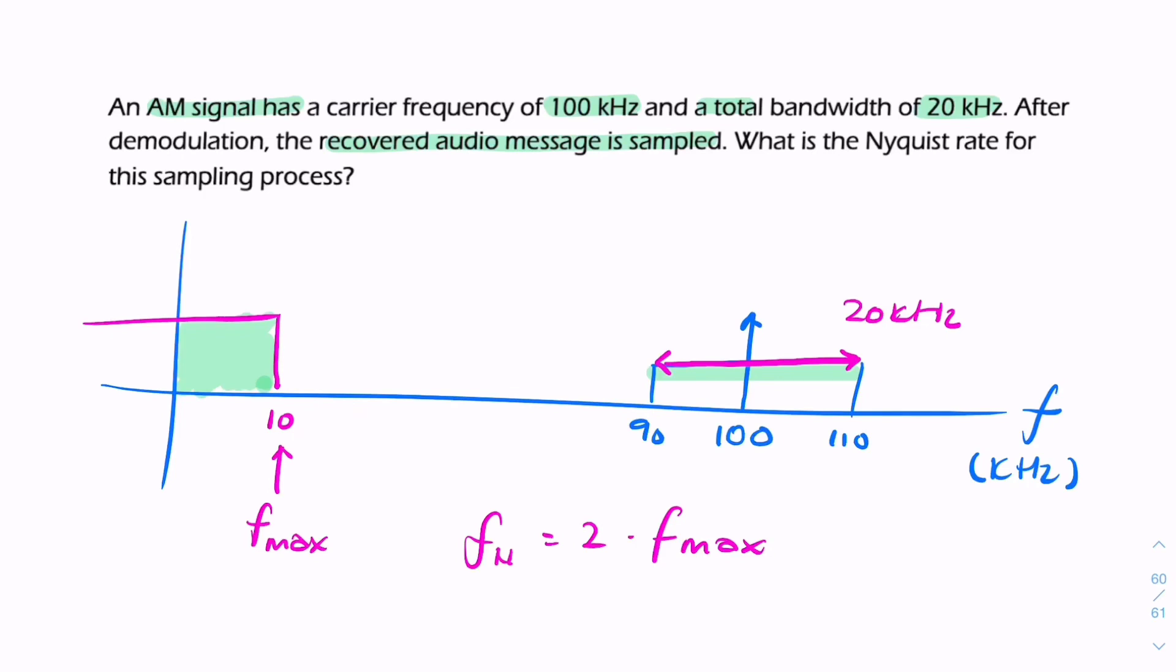It doesn't matter what the frequency of the carrier was or the frequency of the upper or lower sideband. We're only interested in f max. Because we're talking about the audio message, the baseband signal, our Nyquist rate will be 2 times 10,000.